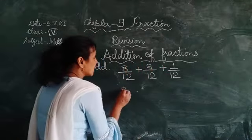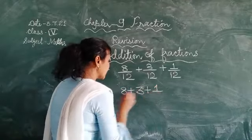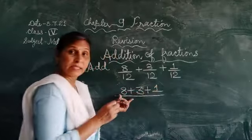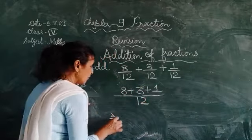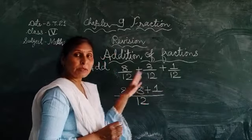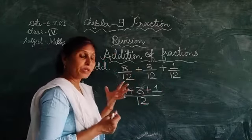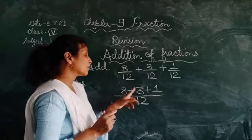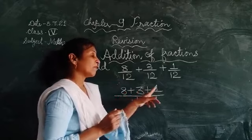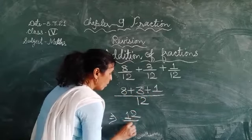Isko add karne ka tarika yeh hai. Saare numerators ko hum is tarah se plus sign se simply karke likh dete hain. Aur common denominator likh dete hain. Phir uske baad jitne bhi numerators given ho vahan, sabko add kar dete hain. Yahan pe humein 3 numerators hain. To hum 3 numerators ko add karke. 8 plus 3 is 11, 11 plus 1 that is 12. 12 upon 12.